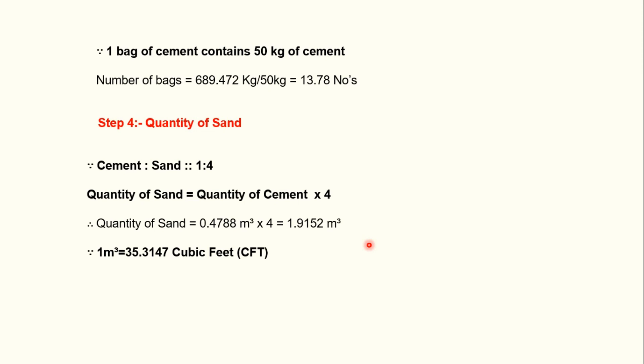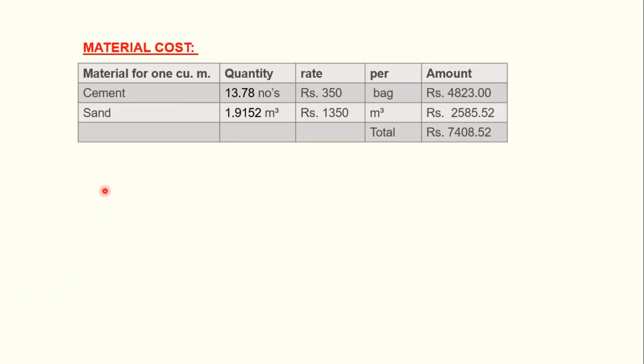In some areas, dealers may sell sand in cubic feet, so I am also finding the quantity of sand in cubic feet. Quantity of sand in cubic feet equals 1.9152 × 35.3147 = 67.634 cubic feet. Now let's see how we can calculate the material cost.